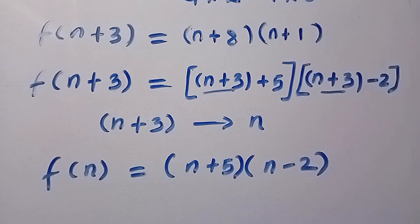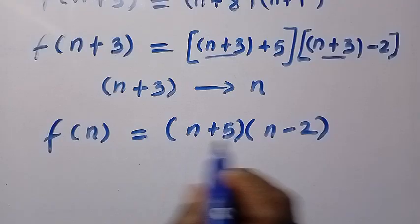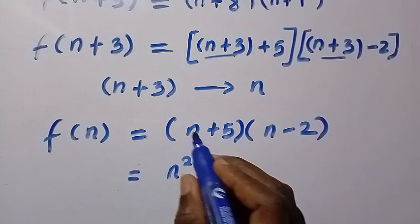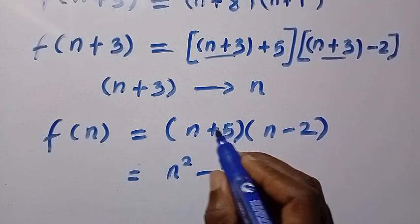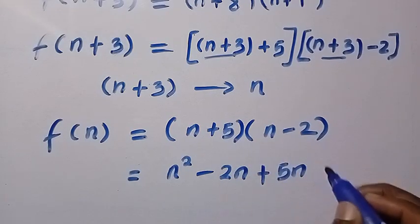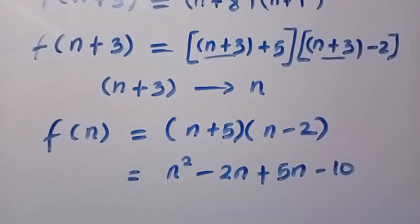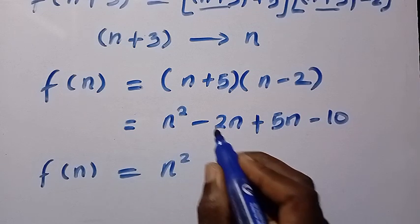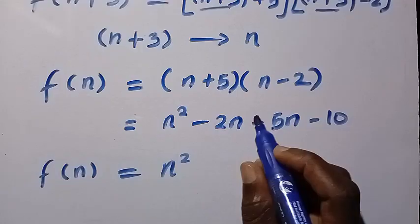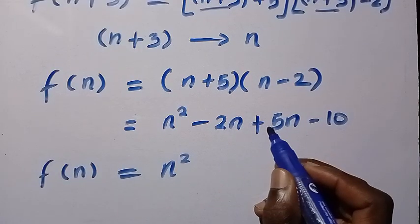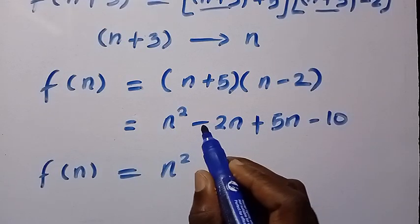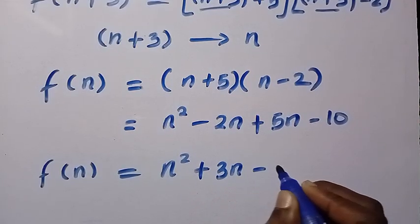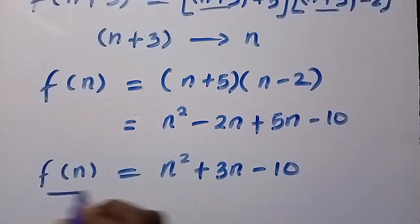We have arrived at another factored form of a quadratic equation. Let's expand this out: n times n is n squared, minus n times 2 is minus 2n, plus 5 times n is plus 5n, and 5 times negative 2 is minus 10. So f of n equals n squared, and combining minus 2n plus 5n gives us plus 3n, then minus 10. So f of n equals n squared plus 3n minus 10.